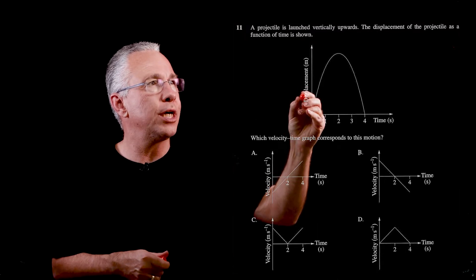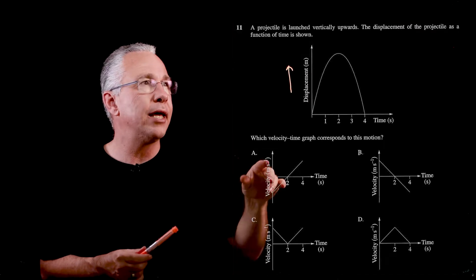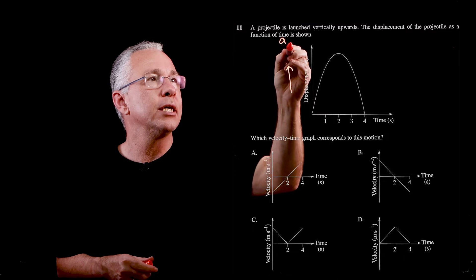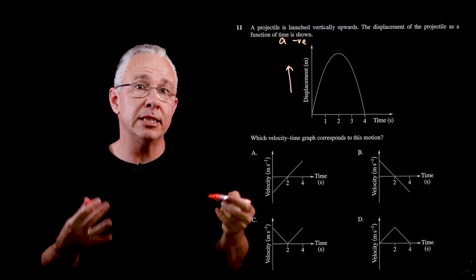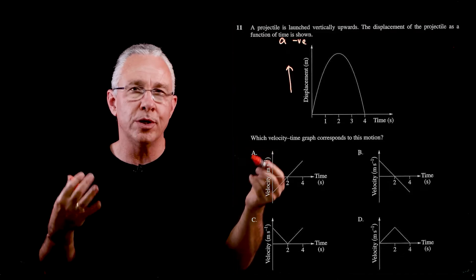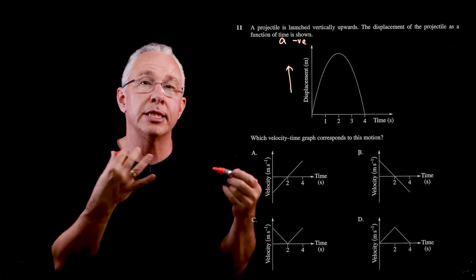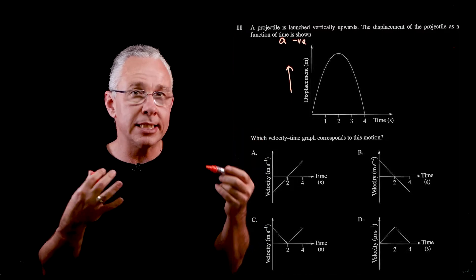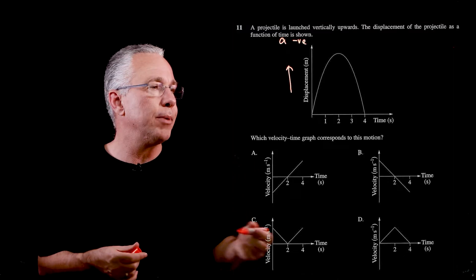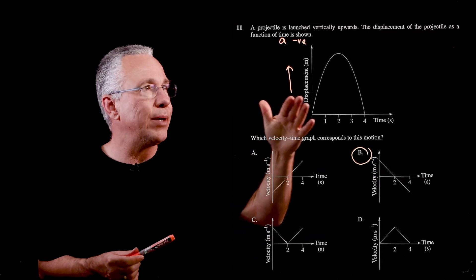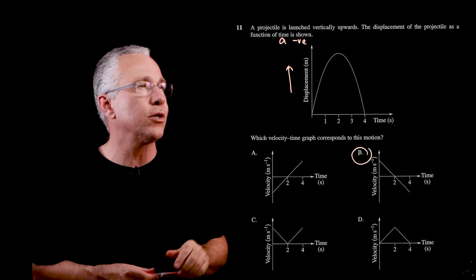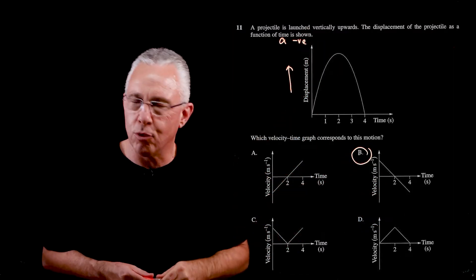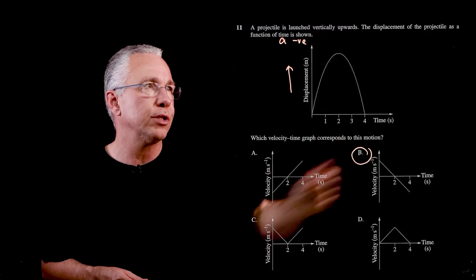Mathematically speaking, because the object is heading upward in the positive direction and the displacement is getting smaller and smaller then moving back down in the opposite direction, that tells us our acceleration is a negative value. Because it's in a gravitational field, the acceleration is constant. So a velocity-time graph needs to be linear with a negative slope. That automatically means our answer is B. It starts with a high velocity, reaches zero at the top, then falls back downward with a negative velocity.